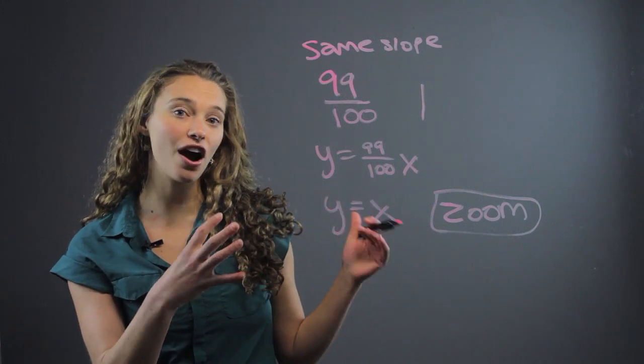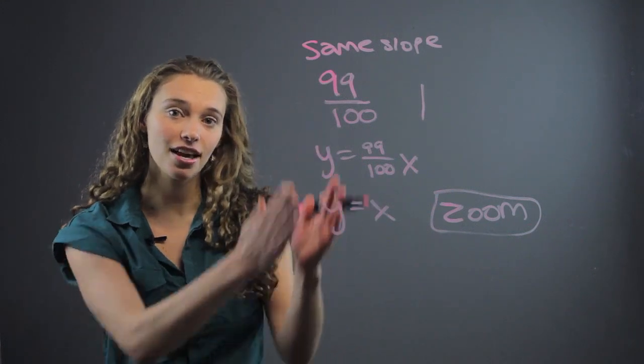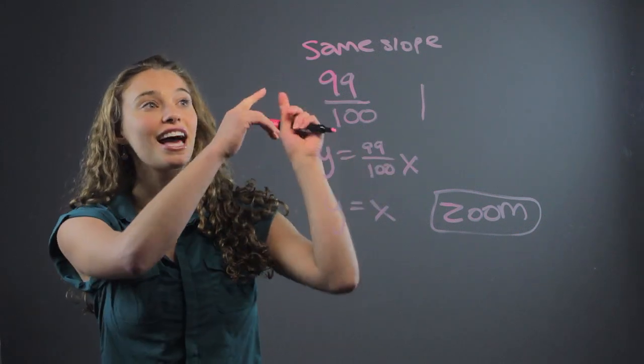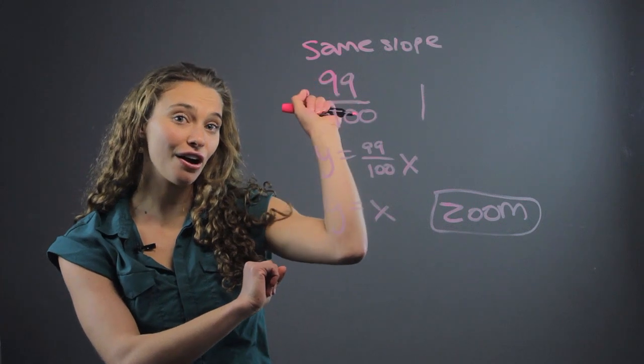You can zoom out really far so maybe the functions look, the lines of the functions look like they're parallel but then you zoom out and you see that actually they intersect. It's just very far away.